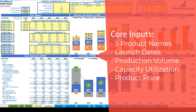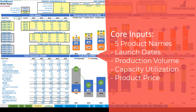The next step is to set up the launch date or start of production for each of these product types. You can use the drop-down and set any month within this five-year model.